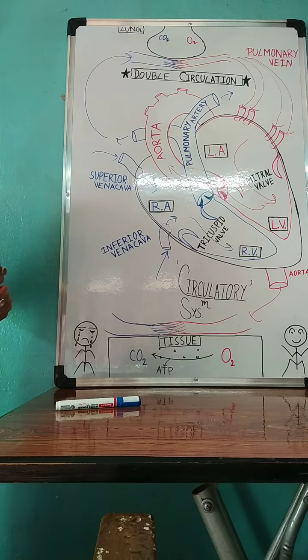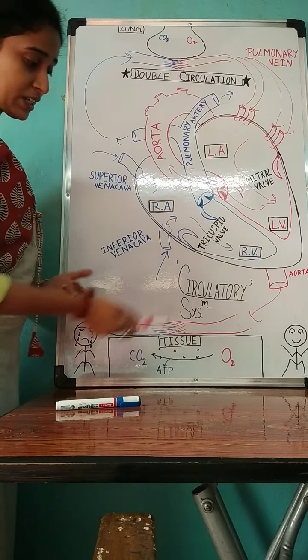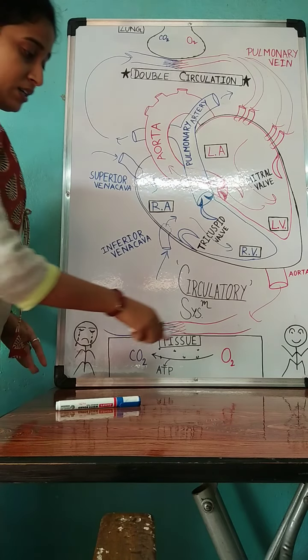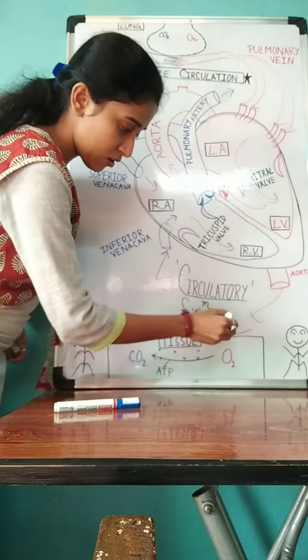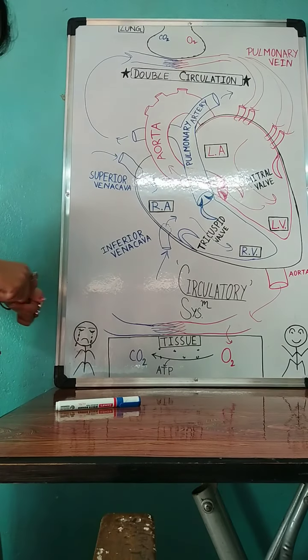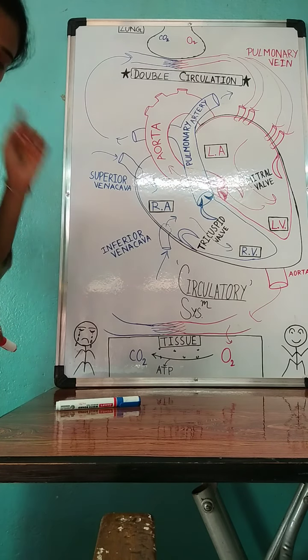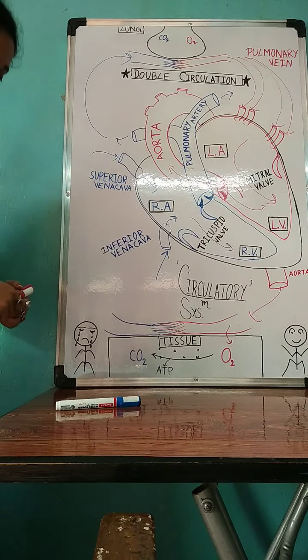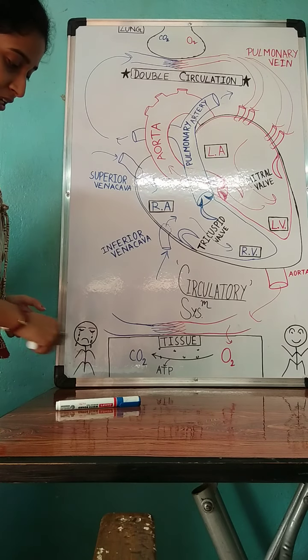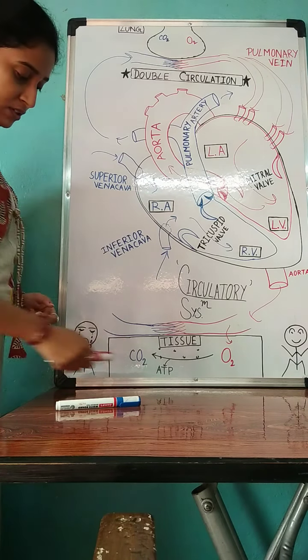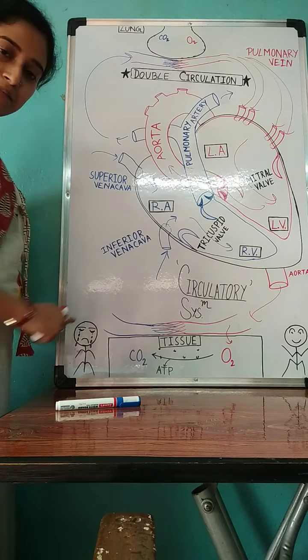This blood goes to all tissues of our body where again gaseous exchange occurs and tissue uses this oxygen to compensate the requirement of ATP, that is energy. And simultaneously carbon dioxide is produced and goes to the capillary vein.